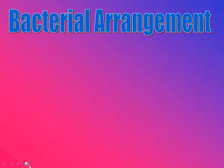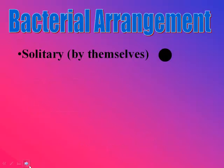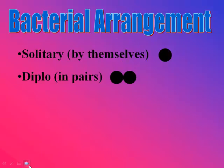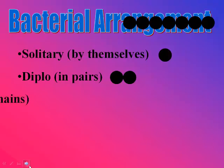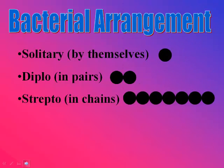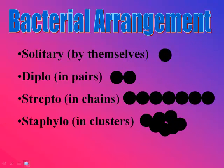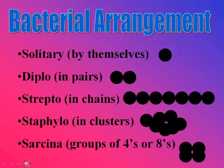Let's look at some of the arrangements. If you have them by themselves, they're called solitary. If they're together, it's called diplo. If it's in chains, it's called strepto. Staphylo is in clusters, and finally sarcina is if there are groups of fours or eights.